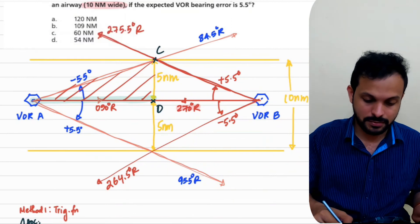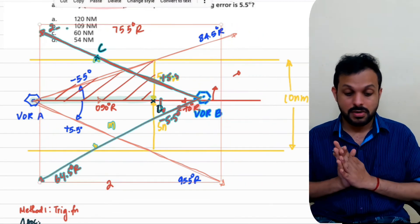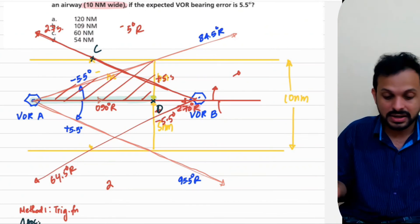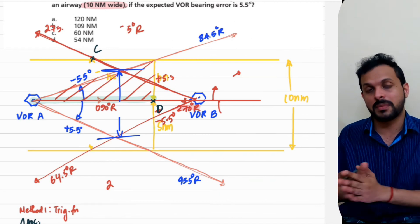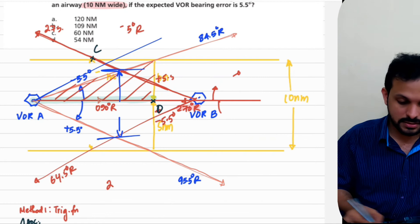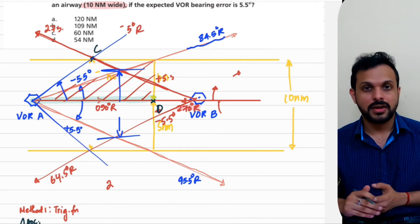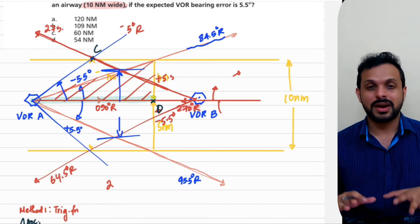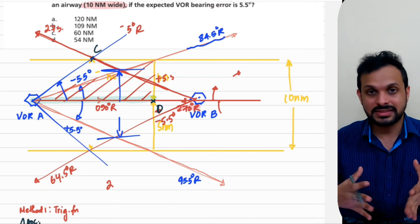What this means is: if the VORs are closer than 104 nautical miles, the airway defined by those radials becomes wider than 10 nautical miles. To bring it back to the standard 10 nautical mile width, you'd have to shift the radials, which would increase the error beyond 5.5 degrees — outside the permissible limits. Therefore, you cannot get a 10 nautical mile wide airway with 5.5 degrees of permissible accuracy if the VORs are less than 104 nautical miles apart.